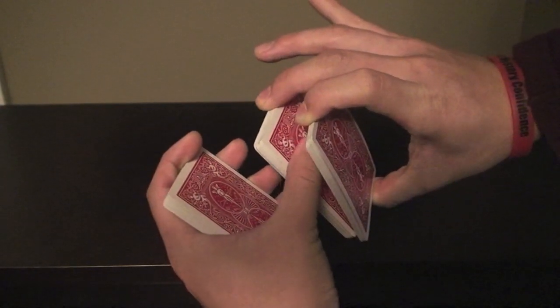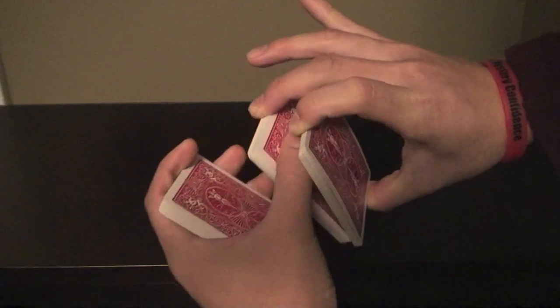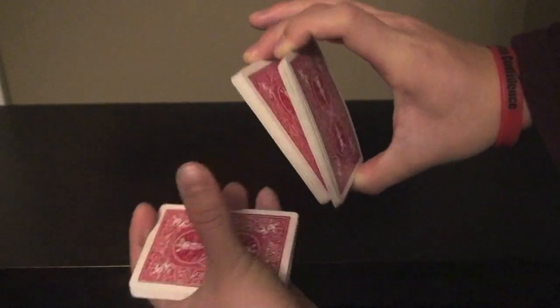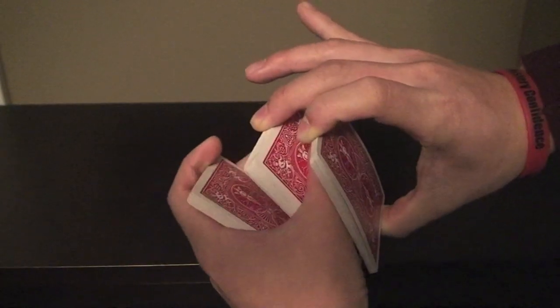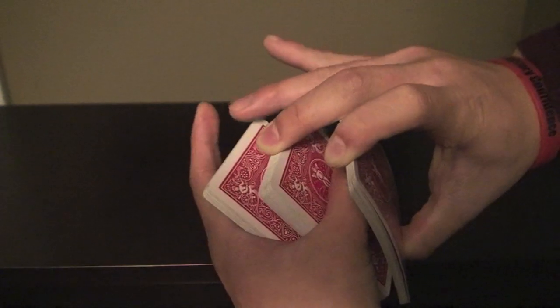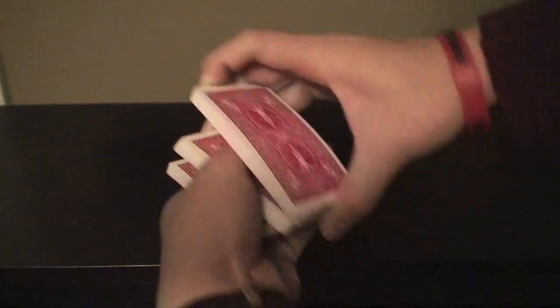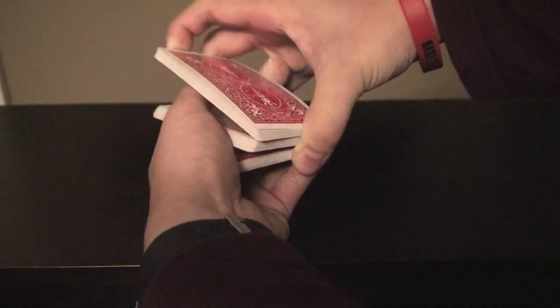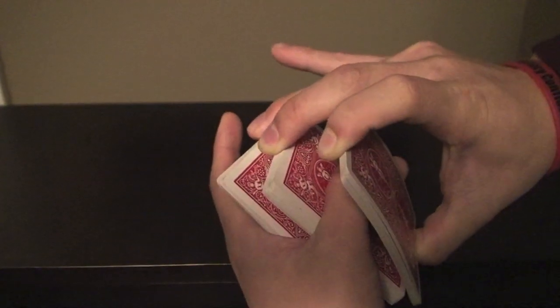Then you're going to come in and jam this middle packet or the bottom packet of the right hand into the crotch there just like that. You're going to take your ring finger right here and clamp down while with your thumb as well just like that. So your thumb is holding this packet with the ring finger.